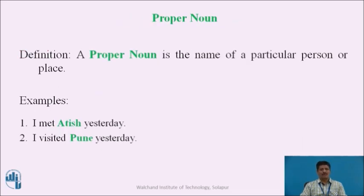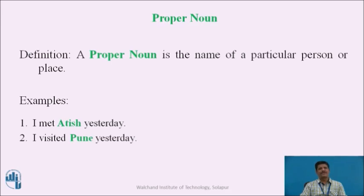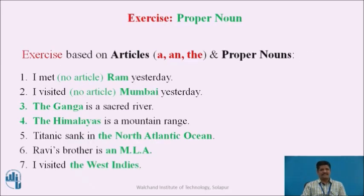Now let us understand the concept of proper noun. A proper noun is the name of a particular person or place — it relates to a name that is very particular, specific, and definite. In sentence 1, 'I met Atish yesterday' — 'Atish' refers to a specific, definite person. In sentence 2, 'I visited Pune yesterday' — 'Pune' is a proper noun referring to a very specific, definite city.